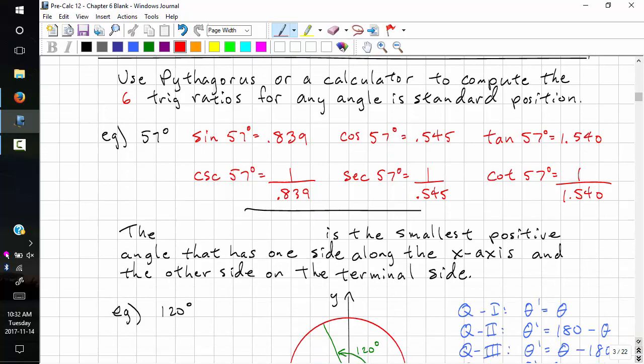A common question that we're asked is use Pythagoras or a calculator to compute the six trig ratios for any angle in standard position. For example, do that for 57 degrees. Sine 57 is 0.839, cos 57 is 0.545, tan 57 is 1.54. We don't have these buttons on the calculator, so we just do 1 over this value, 1 over this value, 1 over this value.